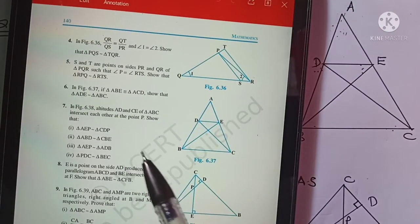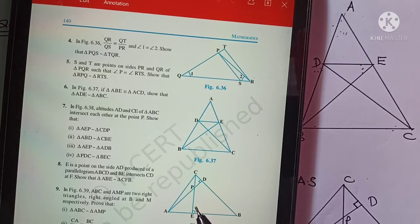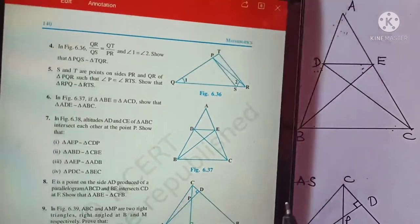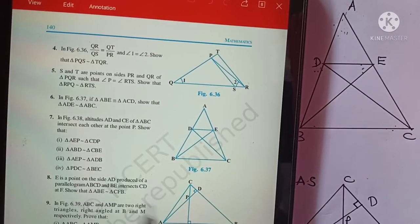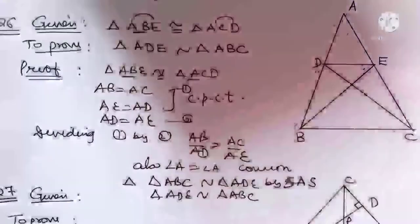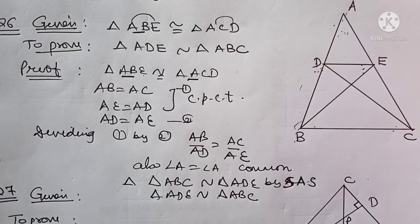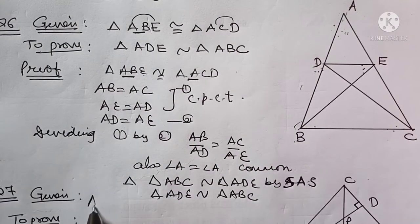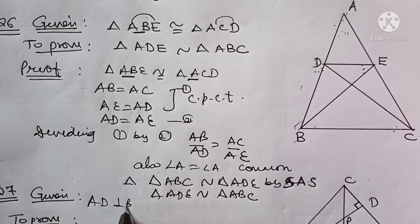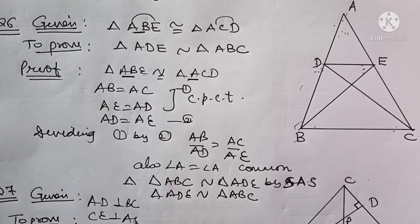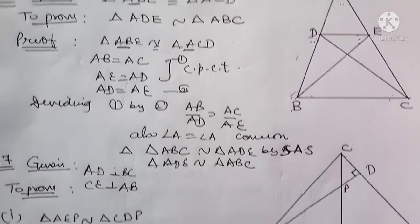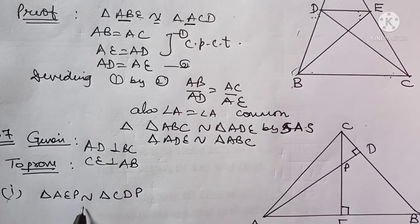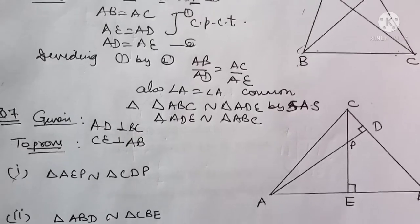Question Number 7: in the given figure, AD and CE are altitudes. Given: AD is perpendicular to BC and CE is perpendicular to AB. There are 4 parts which we have to prove. Let's consider them one by one.